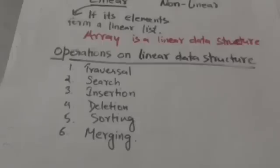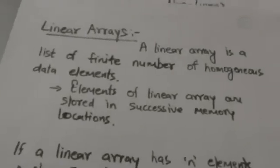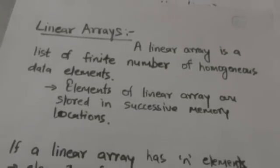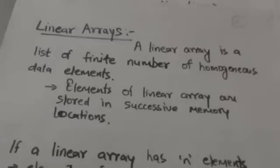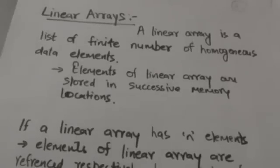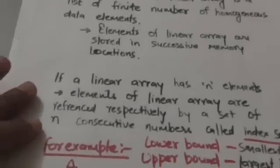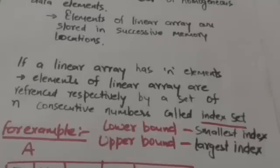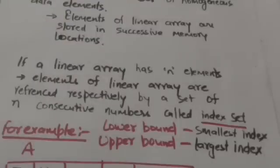Now we will study about linear arrays. A linear array is a list of a finite number of homogeneous data elements. Homogeneous data elements means data elements of the same type. Elements of a linear array are stored in successive memory locations. If a linear array has n elements, then elements of the linear array are referenced respectively by a set of n consecutive numbers called the index set.